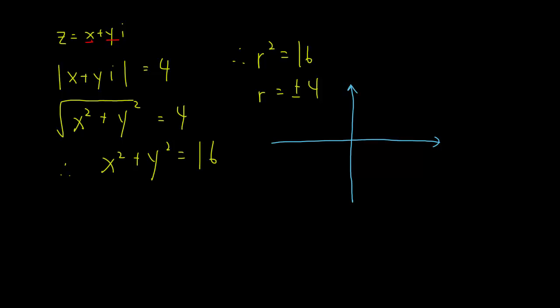So on the argon diagram, I'll start with the origin, 0, 0, because there's no translation. And then I'll mark 4 this way and then 4 that way. And then I draw the circle.